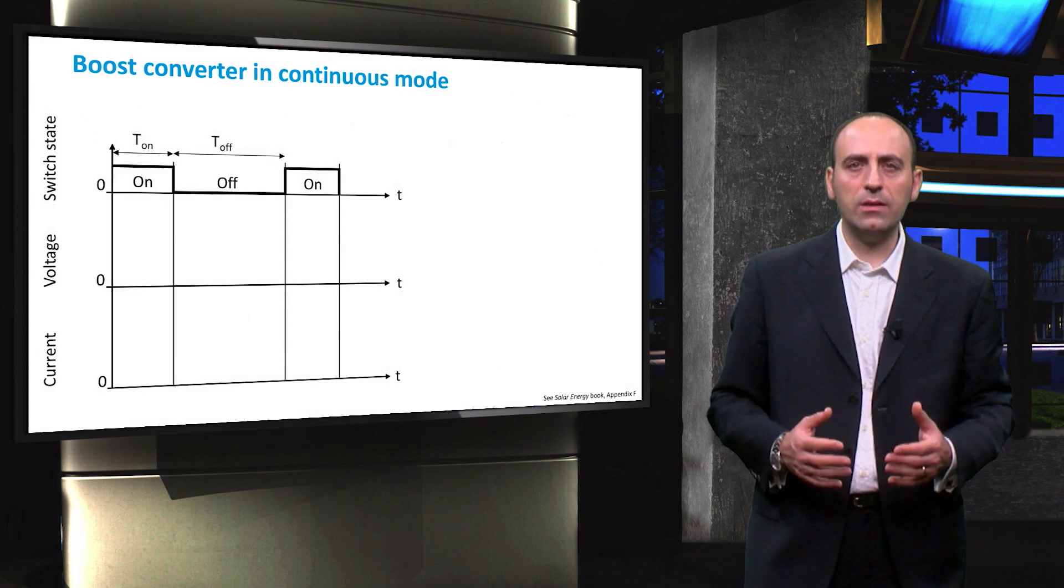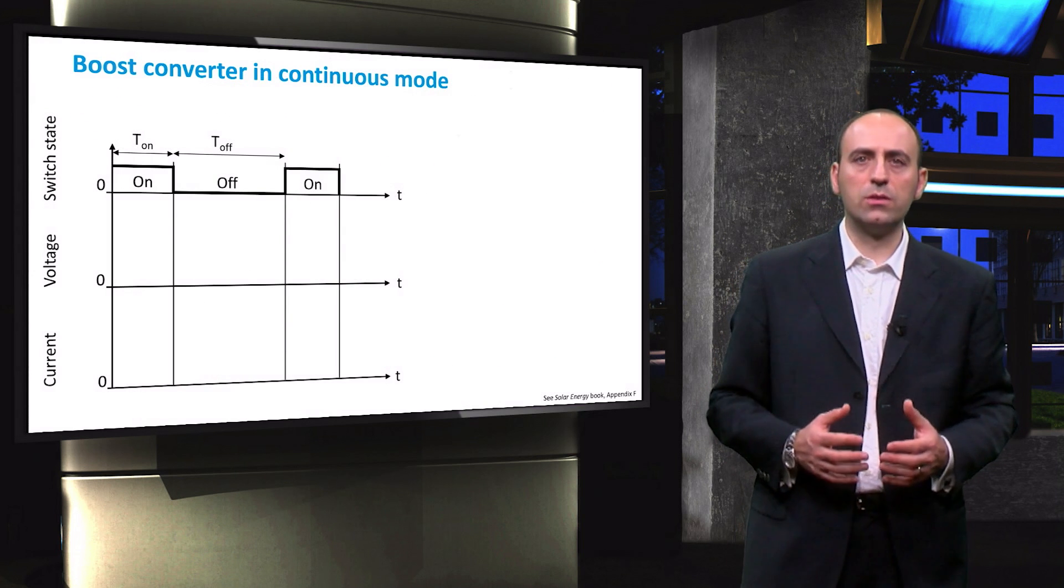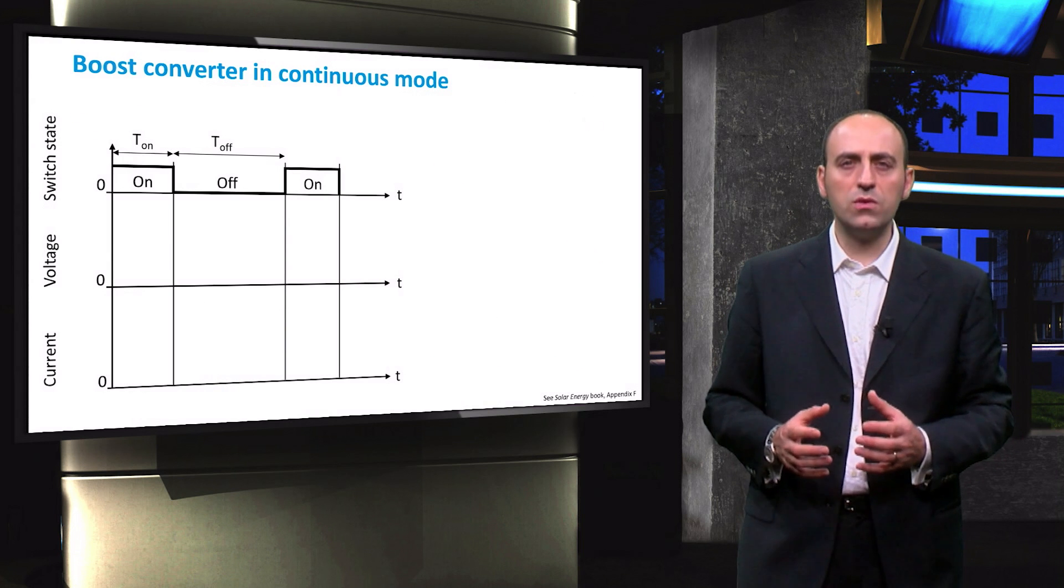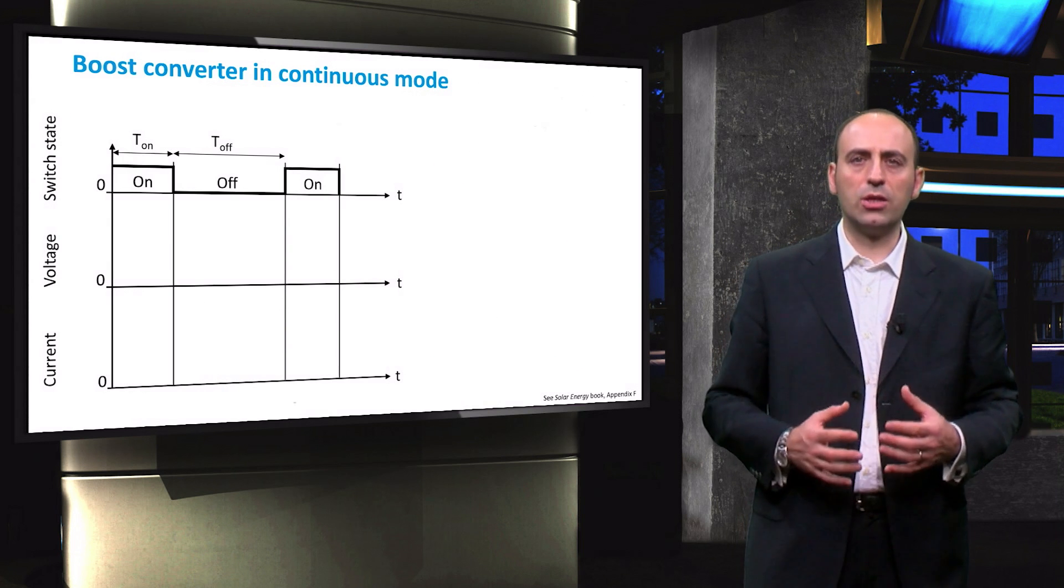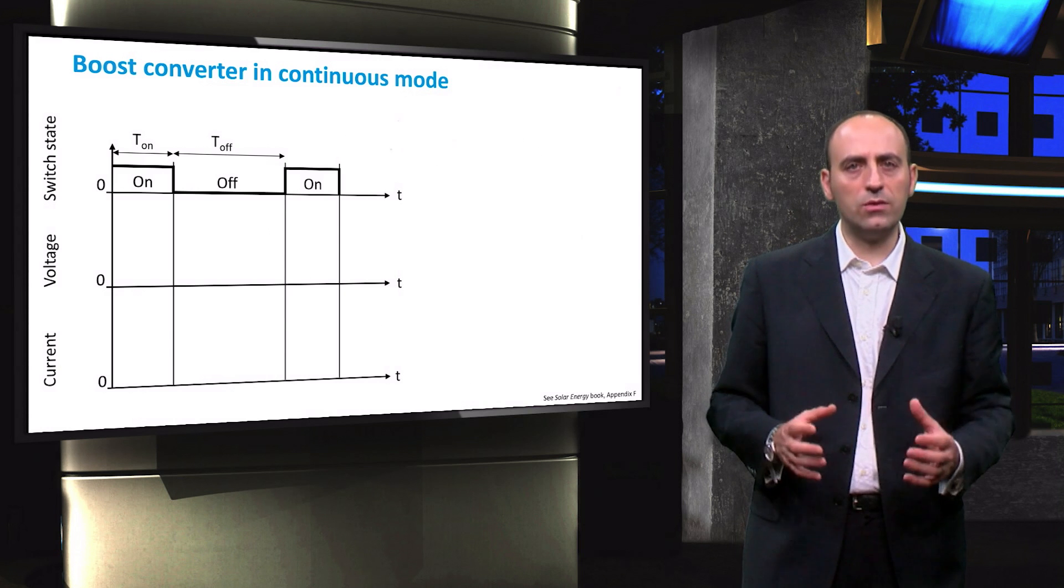Now that we have in mind how the net works during the ON and OFF modes, we will combine them and build the voltage and current signals during one entire cycle.